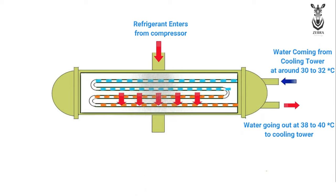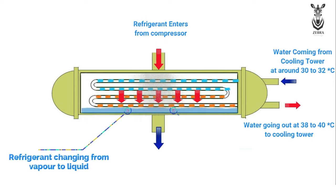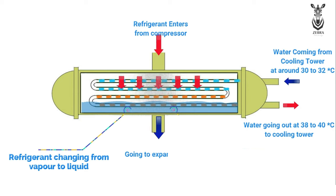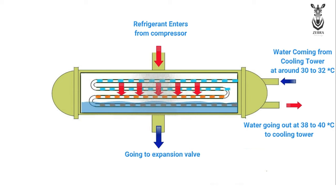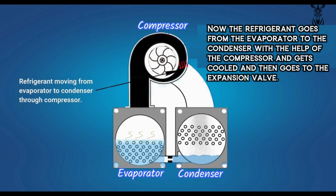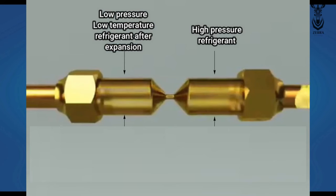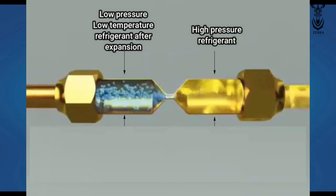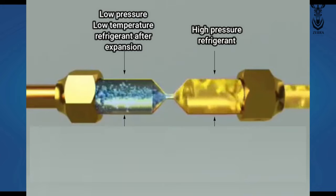As the temperature of the refrigerant decreases, it changes from vapor phase to liquid phase. Next, the refrigerant travels to the expansion valve. The expansion valve reduces the pressure and temperature of the refrigerant, which comes in at high pressure and high temperature.